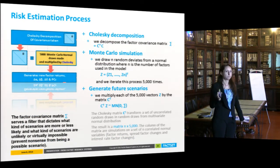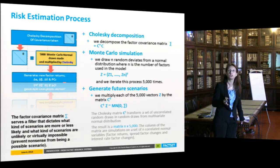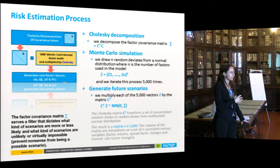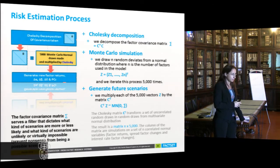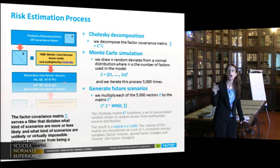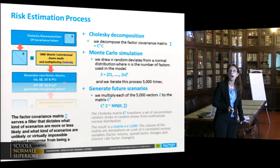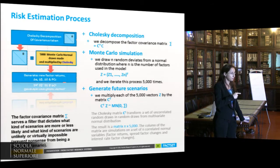The goal of the Monte Carlo simulation process is to generate scenarios for factor returns, and then we will use these scenarios to reprice securities. The model assumes that factor returns are distributed jointly as a multivariate normal distribution. What we have to do is generate N normal deviates — where N is the number of factors in the model — and we do this 5,000 times. It's quite easy to generate N normal deviates if they are independent, but the challenge is to have them correlated.